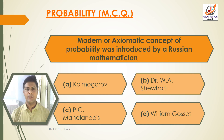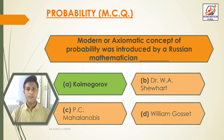Question 4: Modern or axiomatic concepts of probability was introduced by a Russian mathematician. Option A: Kolmogorov. Option B: Dr. W.S.U. Hart. Option C: P.C. Mahalanobis. Option D: William Gosset. Answer: Option A — Kolmogorov. Modern or axiomatic concept of probability was introduced by Russian mathematician Kolmogorov.